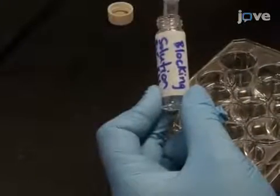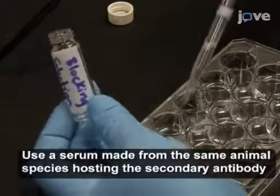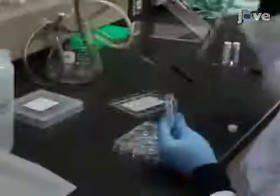Block the sections by incubating in a solution of 2% normal serum and 0.5% cold fish gelatin diluted in PBS for one hour at room temperature with gentle rocking.